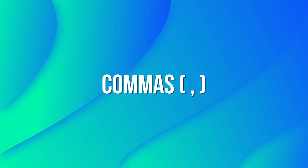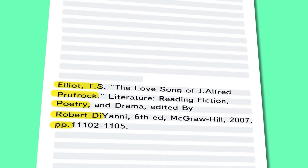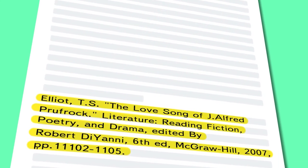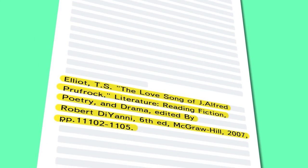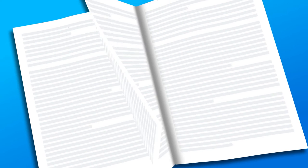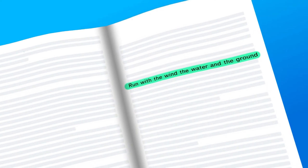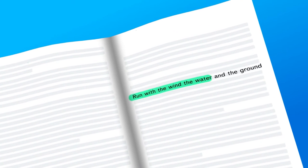Mistake 1: Commas. The most common grammar mistake in poetry occurs during the citation of someone's work. You have to be careful to cite the work as is. The way the poem was written makes an artistic style of its author, and they don't always follow the rules. So if you see a sentence in a poem written like this — "Run with the wind, the water, and the ground" — don't rewrite the sentence adding commas. Just cite the original work and leave out the commas.